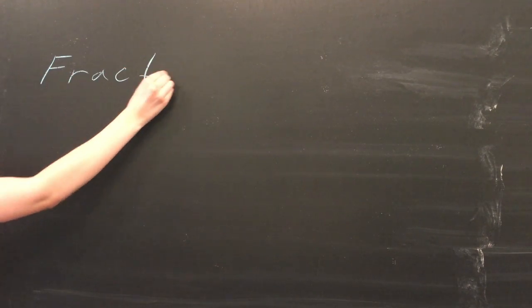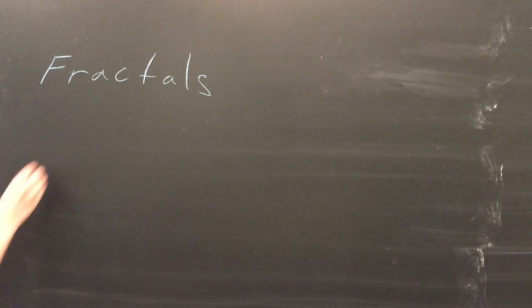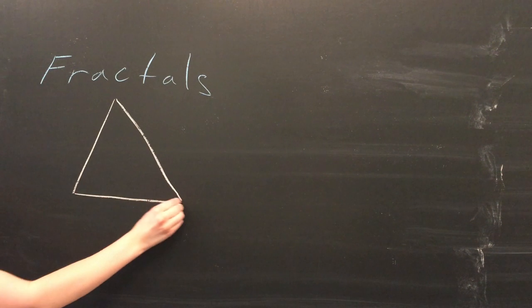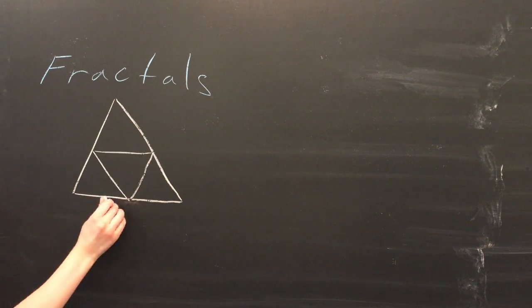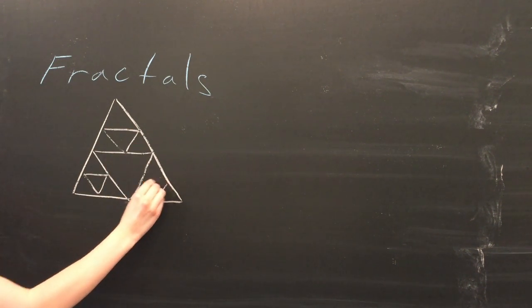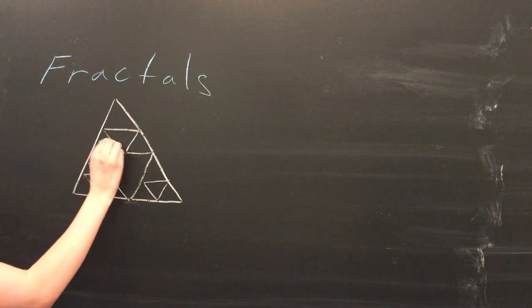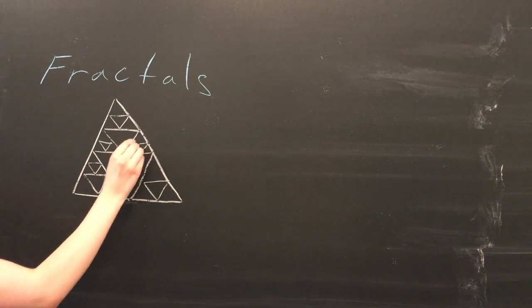A fractal is an entity, either occurring naturally or created mathematically, that exhibits a repeating pattern at every scale. This means that if you zoom in on the fractal pattern, it will look the same or nearly the same at every level. Sometimes this is called scaling invariance or evolving symmetry.